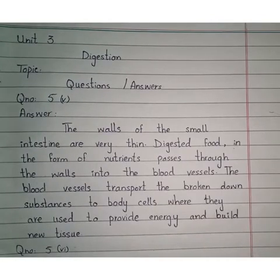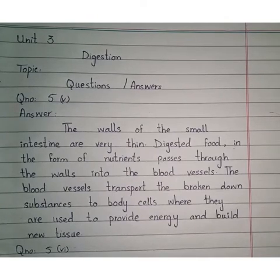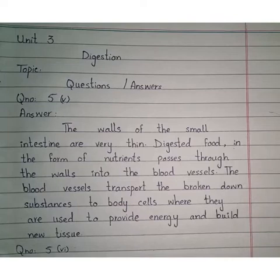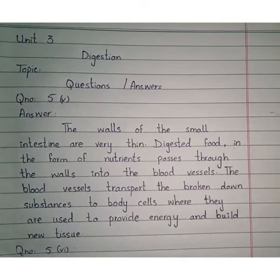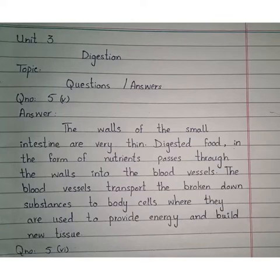The walls of the small intestine are very thin compared to the large intestine. When food digestion occurs in the small intestine, the digested food in the form of nutrients passes into the blood vessels. From the blood vessels, the broken substances of food are transported to all body cells, where they are used to provide energy and to build new tissues.